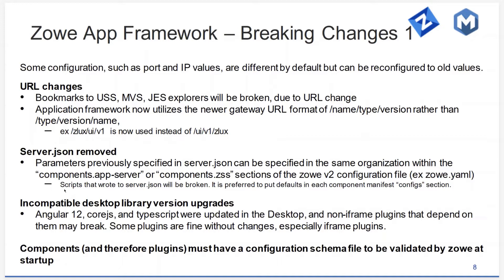With those enhancements came some breaking changes. Some of the URLs will be different, so bookmarks to the web explorers are not going to be valid because the web explorers are now served from a different server. The app framework also prefers to use the new URL format of the gateway. The gateway has both a new and old URL format, but the application framework prefers the new one. Wherever we used to have references such as UI V1 ZLUX, it is now flipped to say ZLUX UI V1.